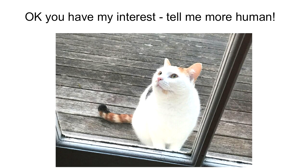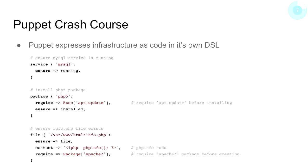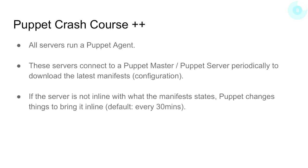If you don't know what Puppet looks like, it looks a bit like this — basically a DSL that says make sure MySQL runs, install PHP, and drop a file. That's pretty much how Puppet looks throughout, depending on different resource types. You can obviously do things that are much more complex, but that's the general gist of it.